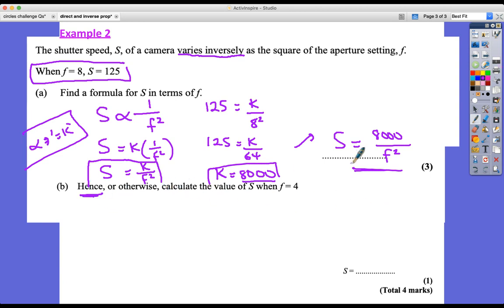Hence, we're going to use the formula. The most sensible decision would be to use the formula that we've just worked hard to find. So hence or otherwise, calculate the value of s when f equals 4. So all we have to do here is put f equals 4 into the formula: s equals 8,000 divided by 4 squared, which is 8,000 divided by 16, which equals 500. So that's the shutter speed, it's 500.